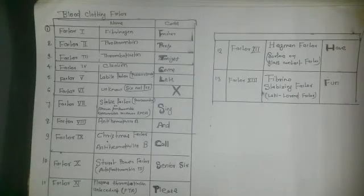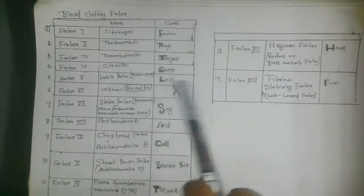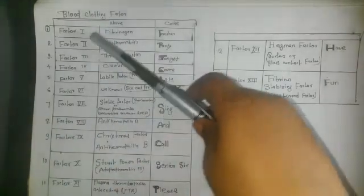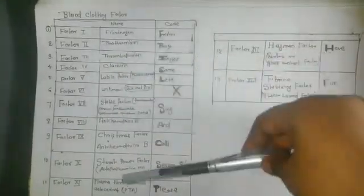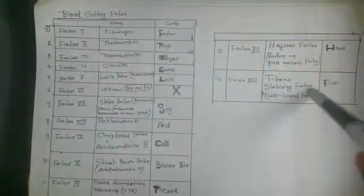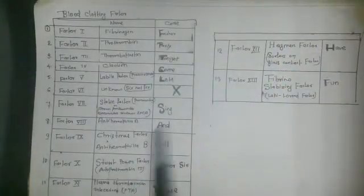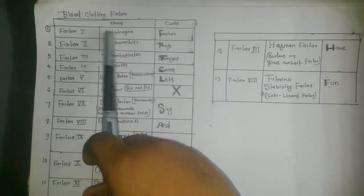Hi guys, I am Gayatri and today's video is about mnemonics of blood clotting factors. It is a very confusing and frequently asked question. So let's start. There are 13 factors, and this is a code — it is very effective and easy to remember.